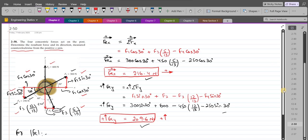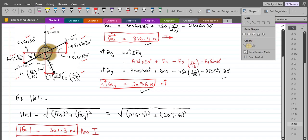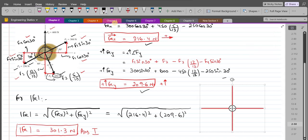If I draw the resultant force, it would look something like this. This is the positive y-axis, this is the positive x-axis, this is the negative x-axis, and this is the negative y-axis. The FRx is directed in the positive x-axis.